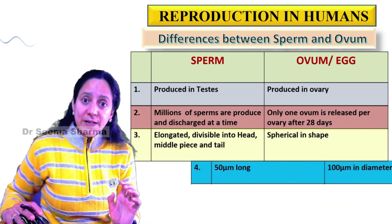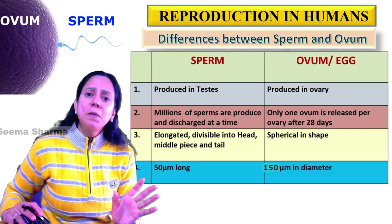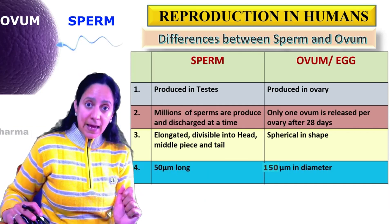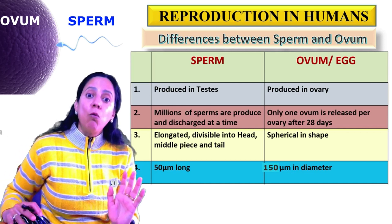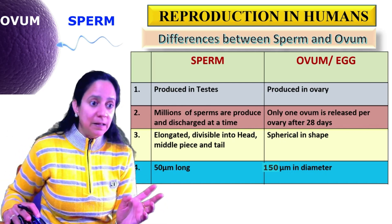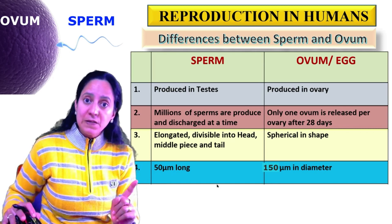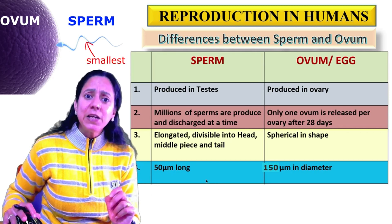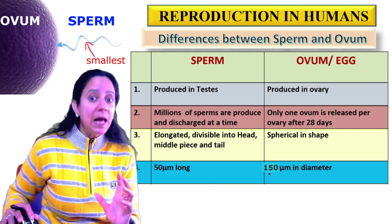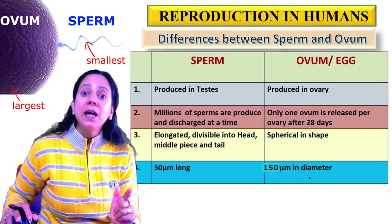Size-wise, sperm is about 50 micrometers in length, whereas egg is around 150 micrometers in diameter. Here you have to remember: the smallest cell in the human body is the sperm cell, and the largest cell in the human body is the egg cell.